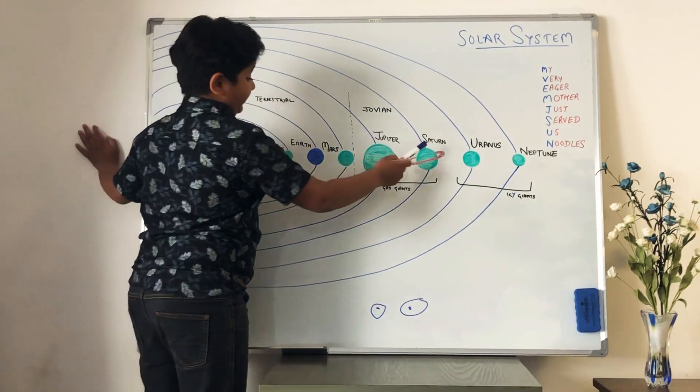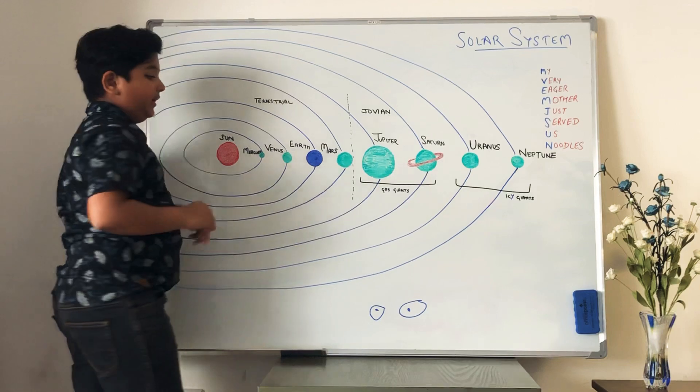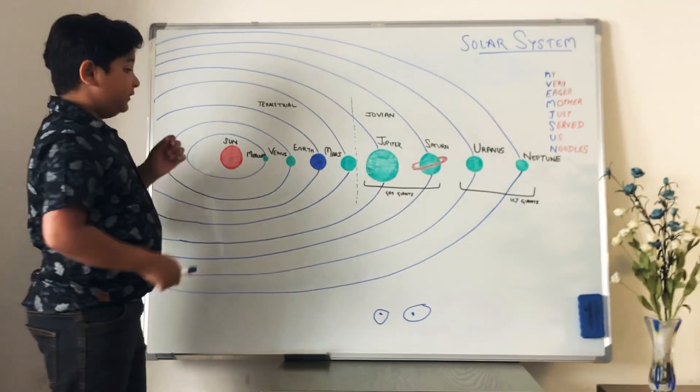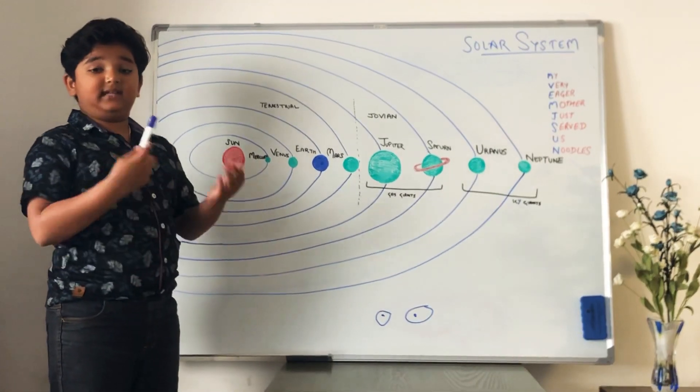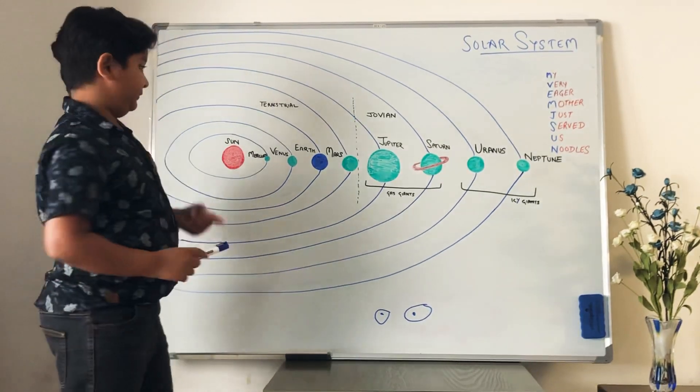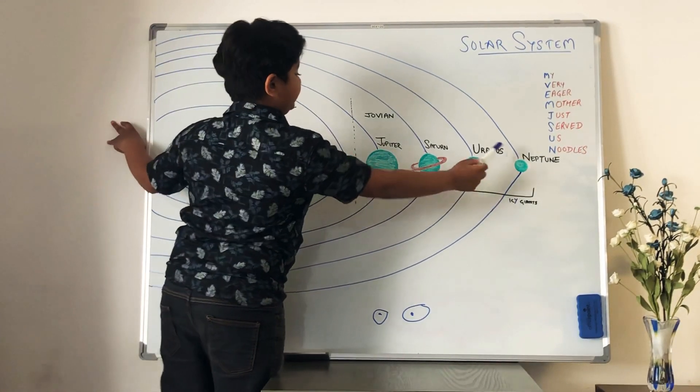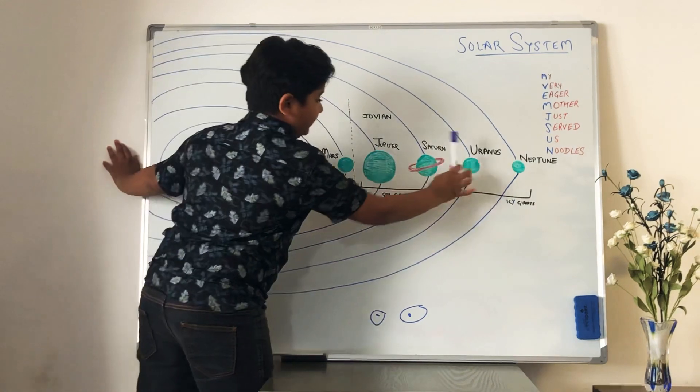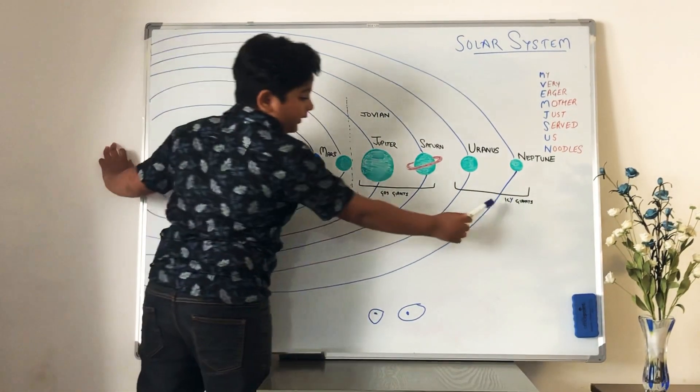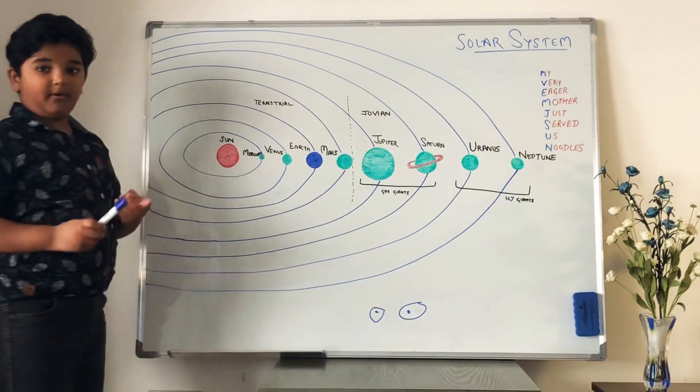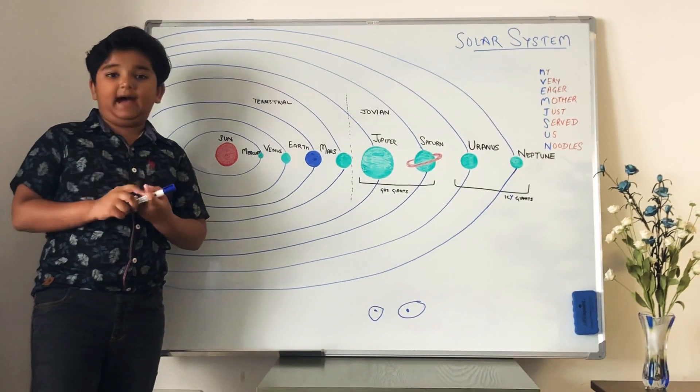And let me tell you what Jovian planets are made up of. Jupiter and Saturn are known as gas giants because they are made up of gas. The gas that they are made up of is known as helium and hydrogen gas. And Uranus and Neptune, which are the farthest from the sun, they are cold. That's why they are called ice giants. And they are made up of rocky material, ice and gas.